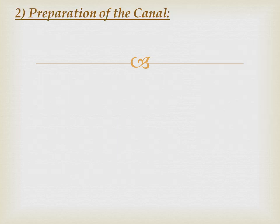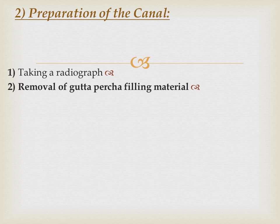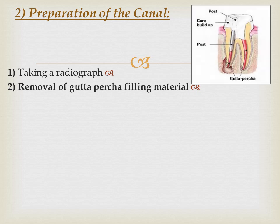For canal preparation, after finishing the coronal portion, we take a radiograph to assess the shape, width, and length of the canal, as well as the quality of the gutta-percha especially at the apical third. We then remove the gutta-percha filling material from the pulp chamber using a hot instrument.